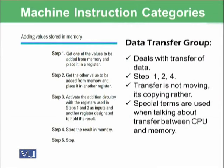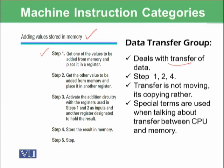The first group is the data transfer group, which deals with the transfer of data. For example, in the algorithm for adding two numbers that we learned previously, step one is to get one of the values to be added from memory and place it in a register. Such work is known as transfer. Steps one, two, and four in that algorithm are data transfer group instructions.